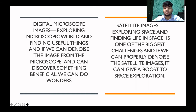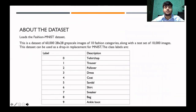Satellite Images: exploring space and finding life in space is one of the biggest challenges, and if we can properly denoise the satellite image, it can give a boost to space exploration as well. About the dataset: I have used the Fashion MNIST dataset of Keras, which is a free dataset available at the Keras website. This is a dataset of 60,000 images — 28x28 grayscale images of 10 fashion categories — along with a test set of 10,000 images. The description of the test set is shown below.